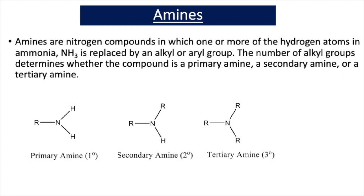In our previous videos on the topic of amines, we've learned that amines are nitrogen compounds in which one or more of the hydrogen atoms in ammonia, NH3, is replaced by an alkyl or aryl group. The number of alkyl groups determines whether the compound is a primary, secondary, or tertiary amine. In a primary amine, we have one alkyl group replacing one of the hydrogens in ammonia, so we have RNH2.